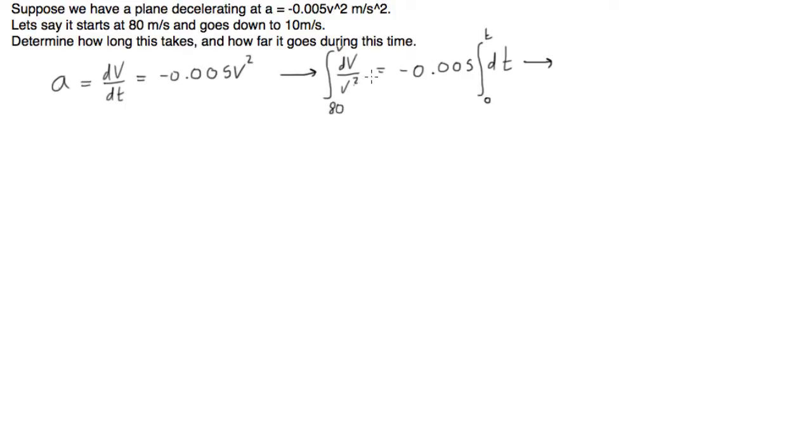The integral of v to the negative 2, or 1 over v squared, is negative 1 over v, from 80 to v. And this equals negative 0.005 times t, from t to 0. Let's substitute our values in. We get negative 1 over v minus negative 1 over 80, so that's plus 1 over 80. This equals negative 0.005t, and minus 0 just goes away.